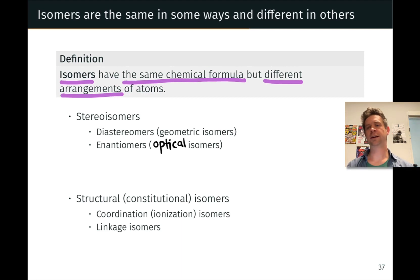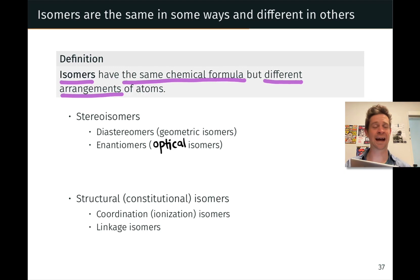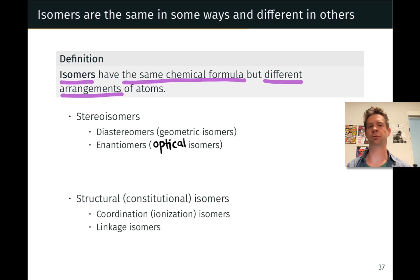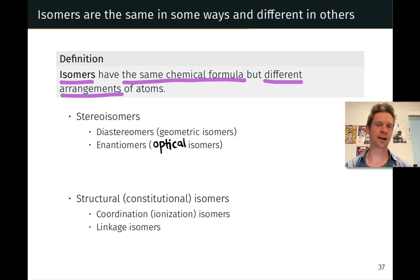Isomerism is important in coordination chemistry because there are different ways ligands can bind to metal centers. We can have complexes that have the same collections of atoms — even the same collections of ligands — that nonetheless have different structures and different properties as a result. It's a great context to begin exploring this idea, and isomerism is just a fascinating concept in general.